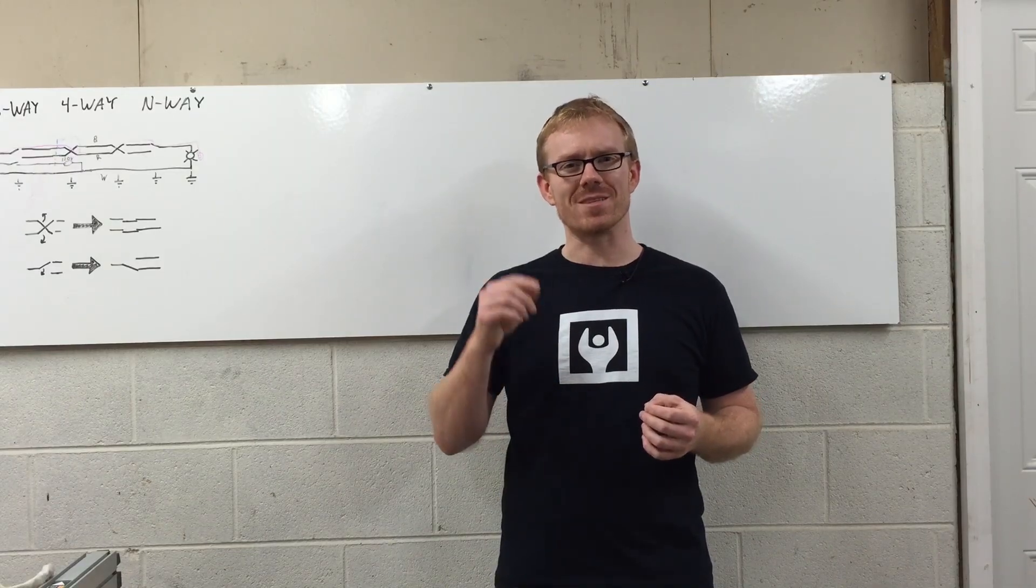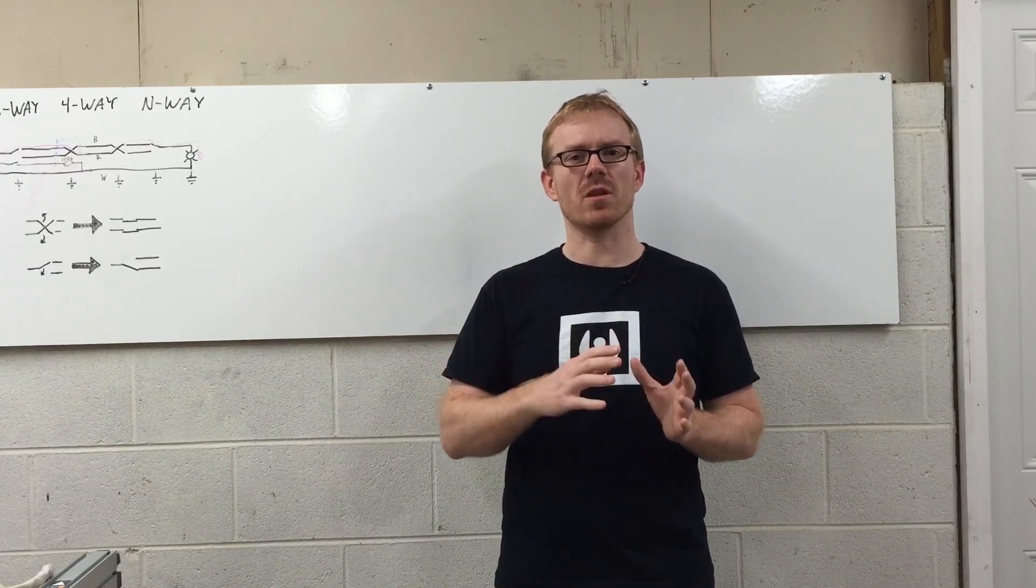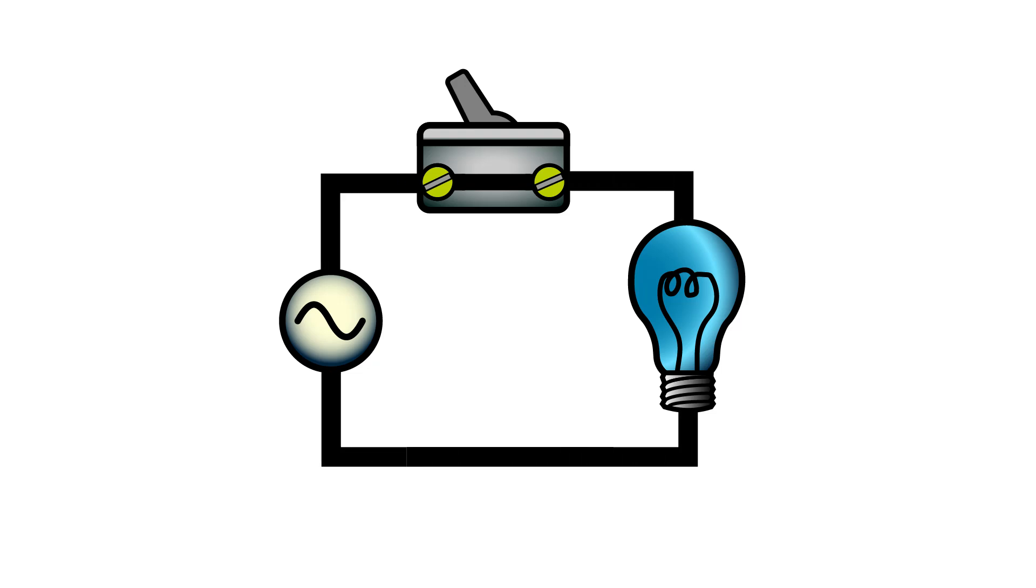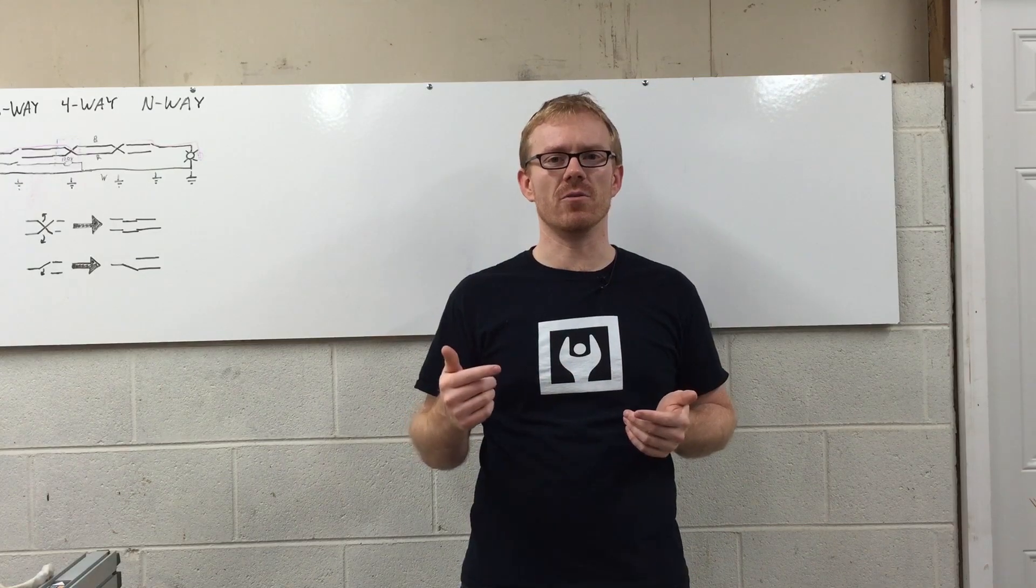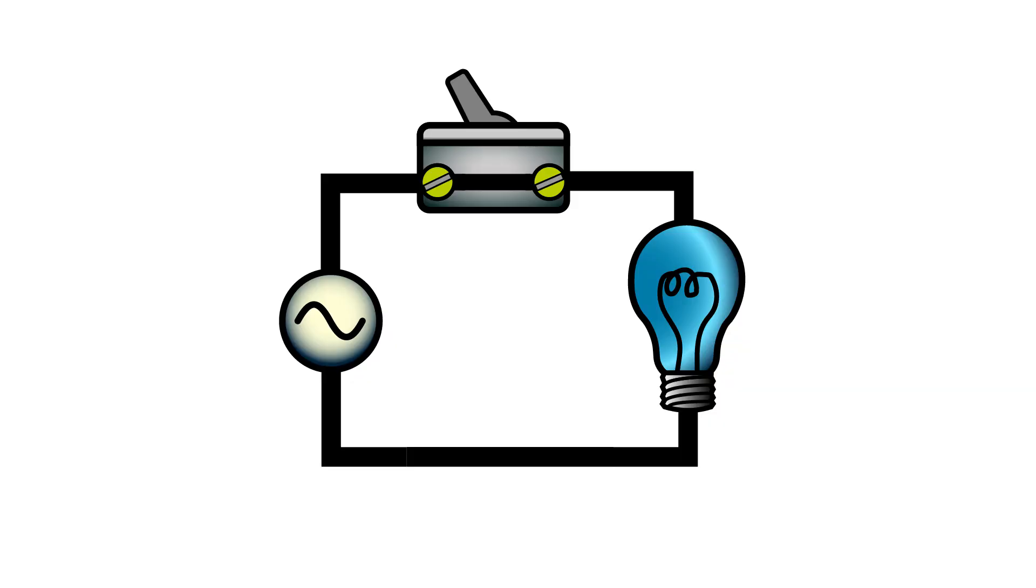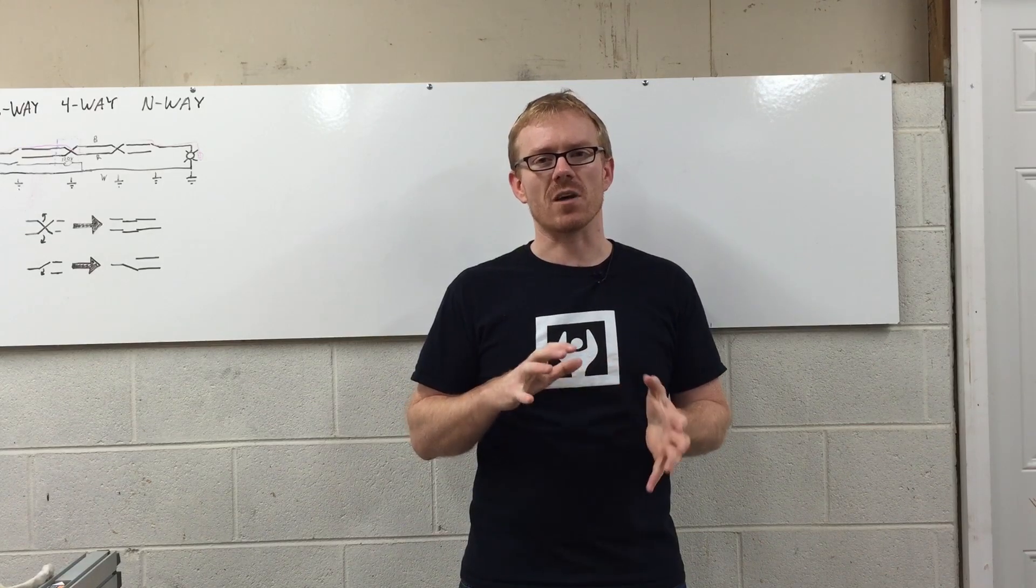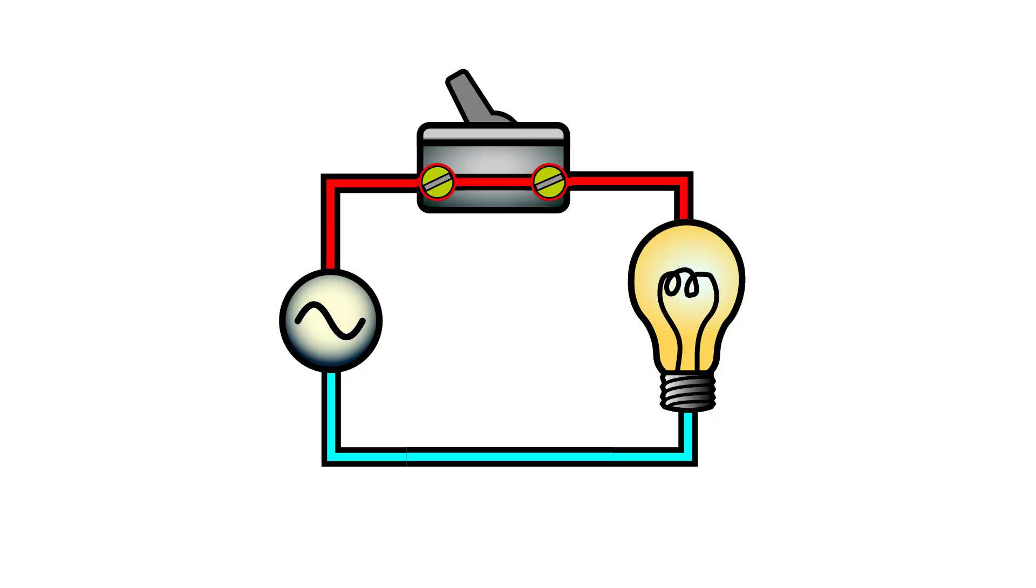In simple switching, you have a single switch in line with the load. When the switch is closed, voltage from the source is presented to the load and establishes current flow. This causes the light to illuminate. When the circuit is open, current can't flow from the source to the load and the light is turned off.